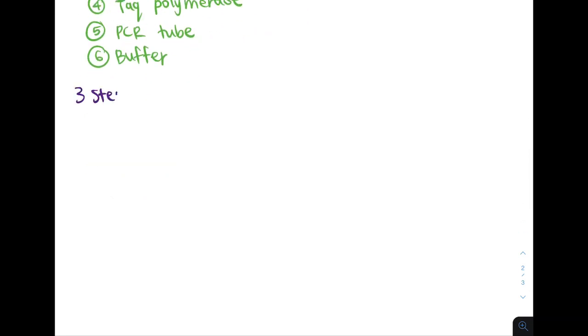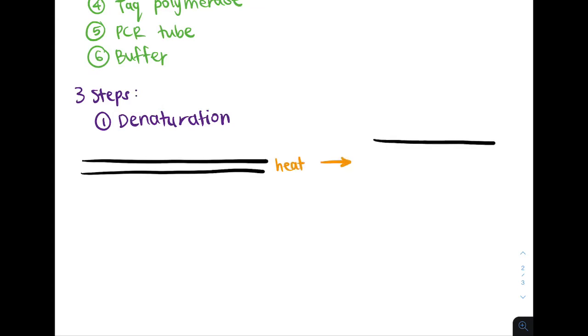Let's now discuss the three steps of PCR. So the first step is denaturation. In this step, we have our DNA duplex, and we will heat the DNA to briefly separate the strands. So each strand will become a template.